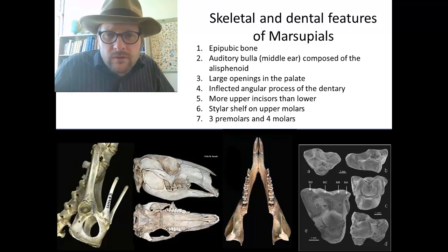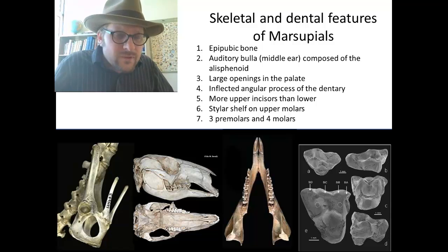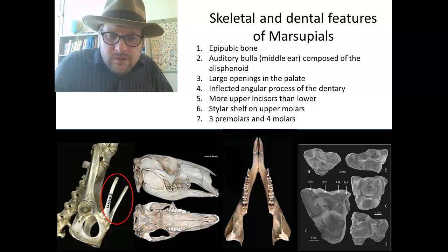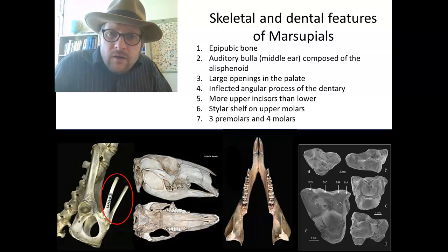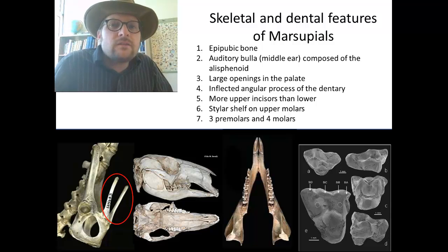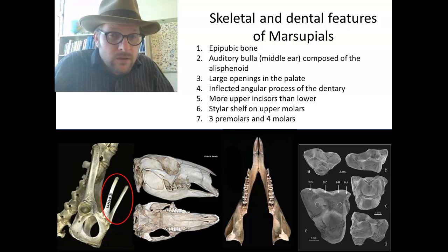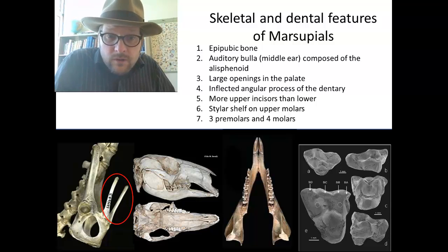Marsupials have a whole suite of characters that placental mammals don't have. The first important one is the epipubic bone — a little extra bone on both sides that comes off the pelvis, which actually provides support for the pouch. We can look for the presence of this bone in fossils from the Cretaceous period.